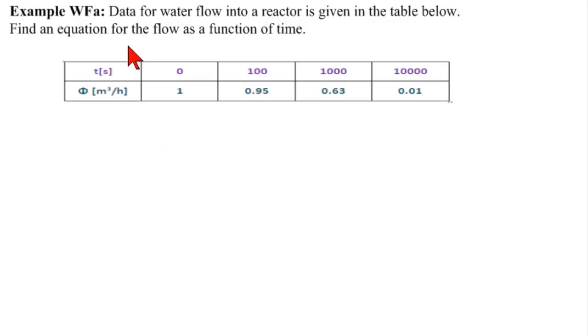In this problem, we're told that the data for water flow into a reactor is given in this table. And we're to find an equation for the flow as a function of time. The first thing we need to notice is that time is given in seconds and the flow is given in meters cubed per hour.